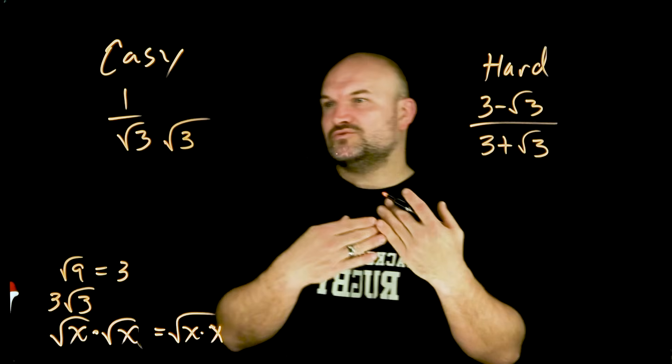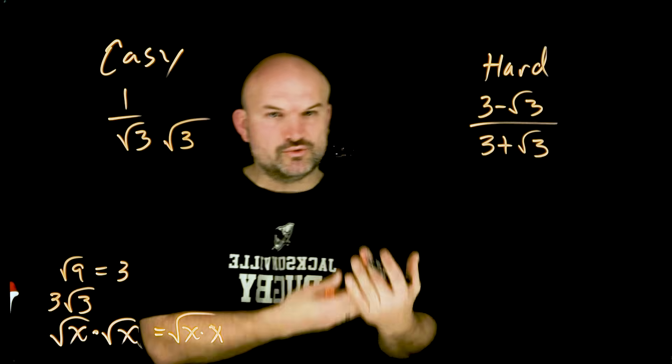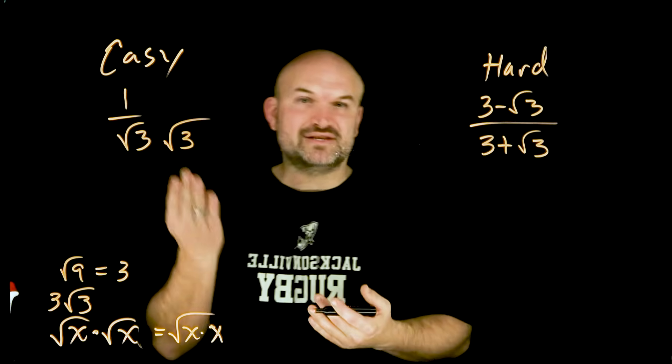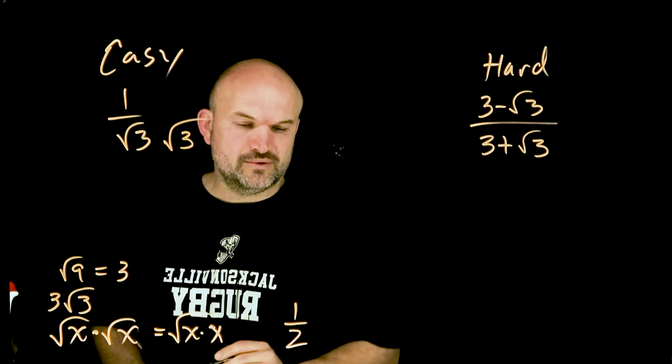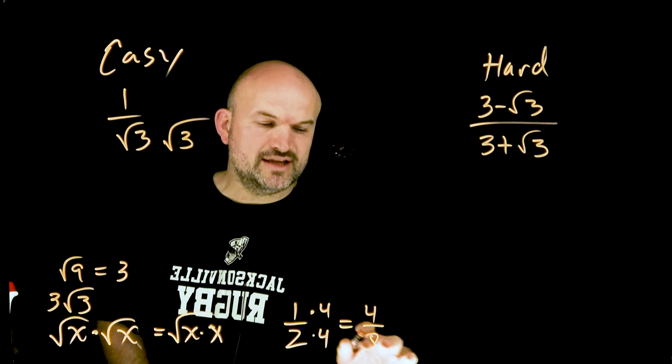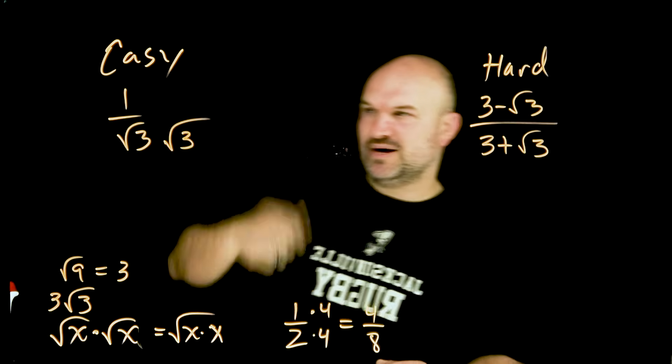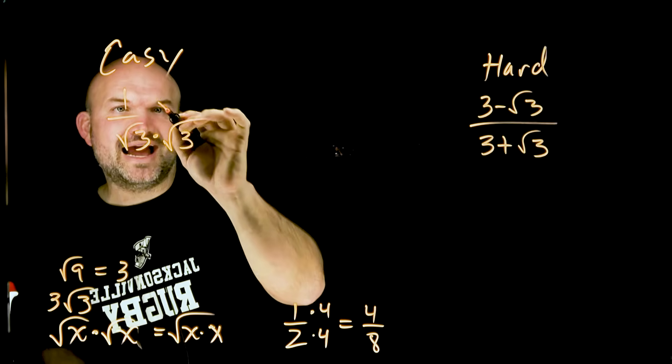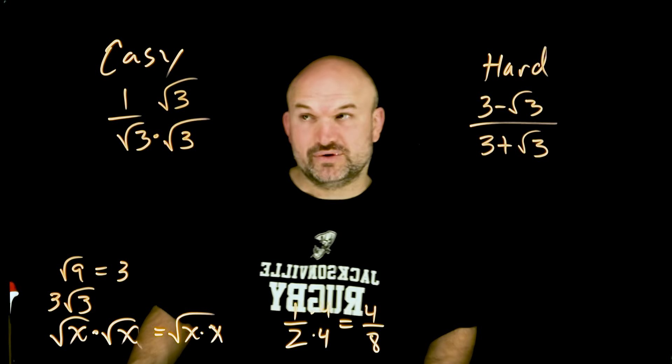But it's also important to remember, we can't just randomly multiply the denominator by the square root of 3, because then we're not going to have the same fraction. If I had 1 over 2, as long as I multiply by a 4 in the numerator and the denominator, I'm going to produce what we call an equivalent fraction. So if I'm going to multiply a square root of 3 in the denominator, I have to make sure I multiply a square root of 3 in the numerator.